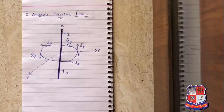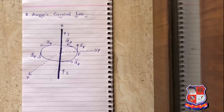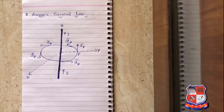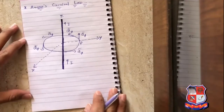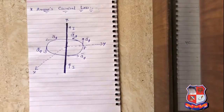Now, the statement of Ampere's Circuital Law: Ampere's Circuital Law states that the line integral of magnetic field intensity H̅ is exactly equal to the direct current enclosed by that path. If we want to represent it mathematically, what is the mathematical equation of Ampere's Circuital Law?